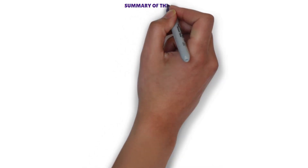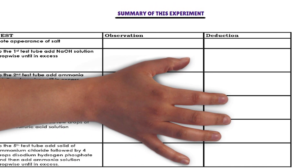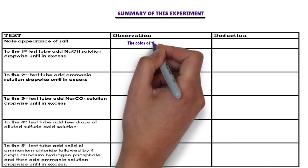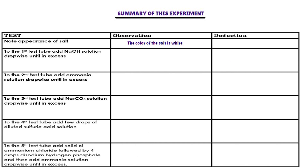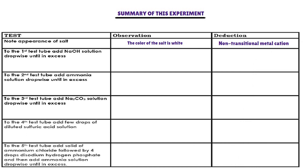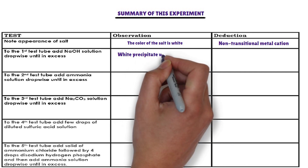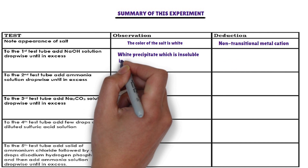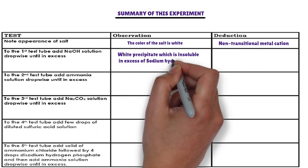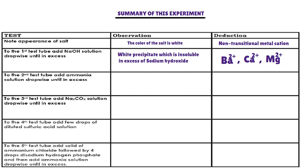Summary of this experiment. Note the appearance of the salt — the color is white. The white color indicates that the cation present in the salt is a non-transition metal cation, for example group 1, group 2, group 3, or group 4 cation. In the first test tube, sodium hydroxide solution is added. The cations that form a white precipitate with sodium hydroxide, insoluble in excess, are barium ion, calcium ion, and magnesium ion.